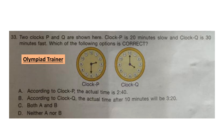Question 33. Two clocks P and Q are shown. Clock P is 20 minutes slow and clock Q is 30 minutes fast. Which of the following options is correct? Clock P shows 2:30, but since it is 20 minutes slow, the actual time is 2:50. Clock Q shows 4:00, and since it is 30 minutes fast, the actual time is 3:30.